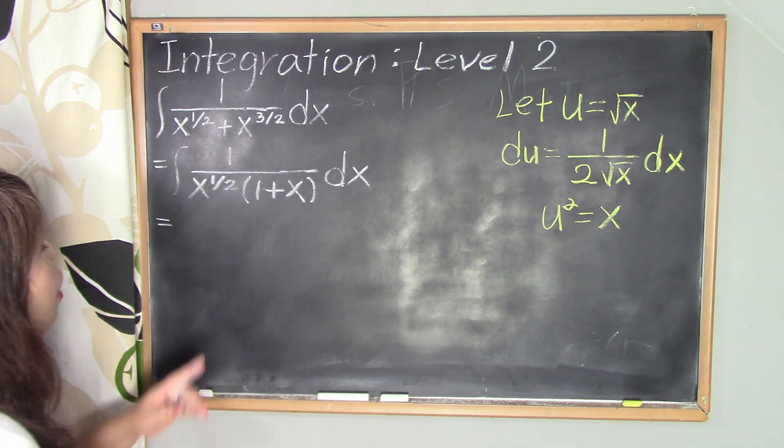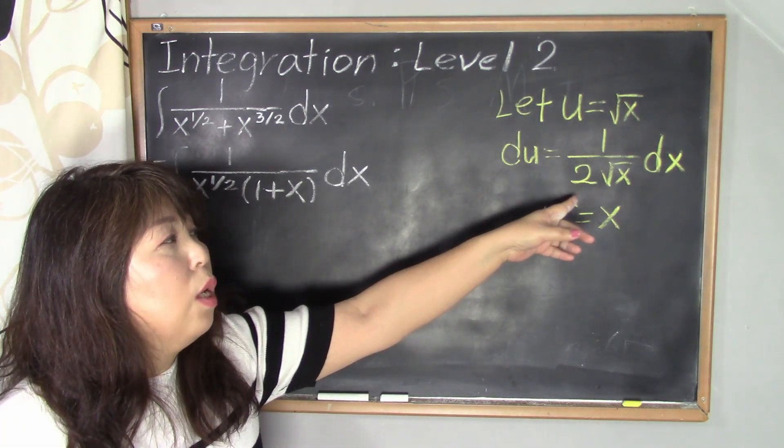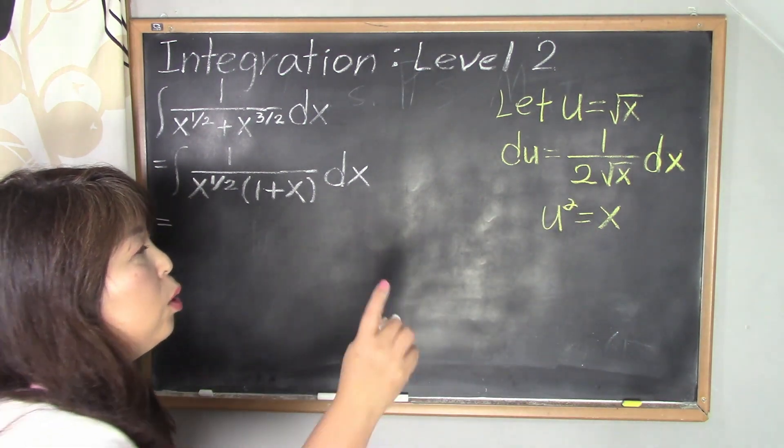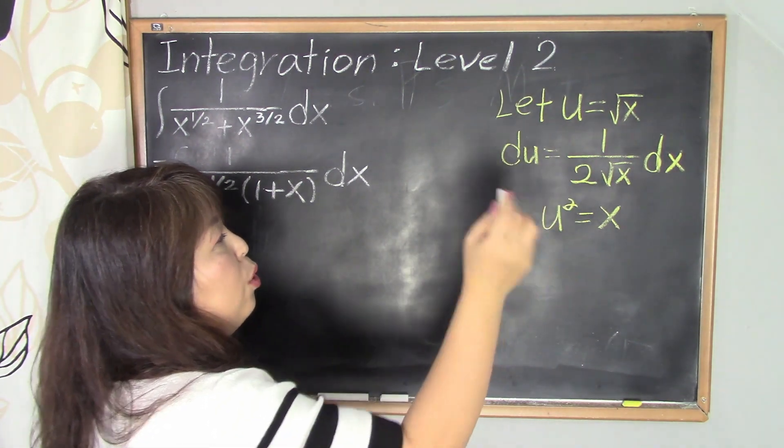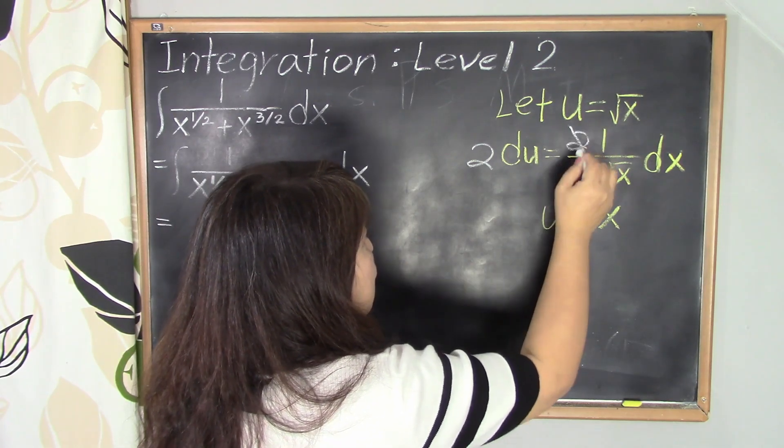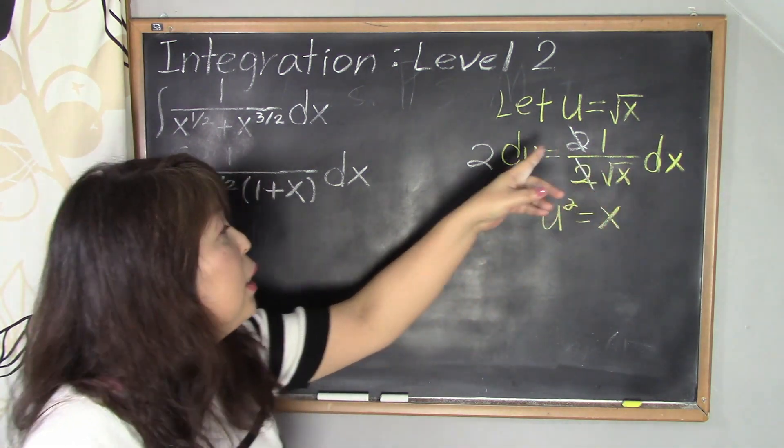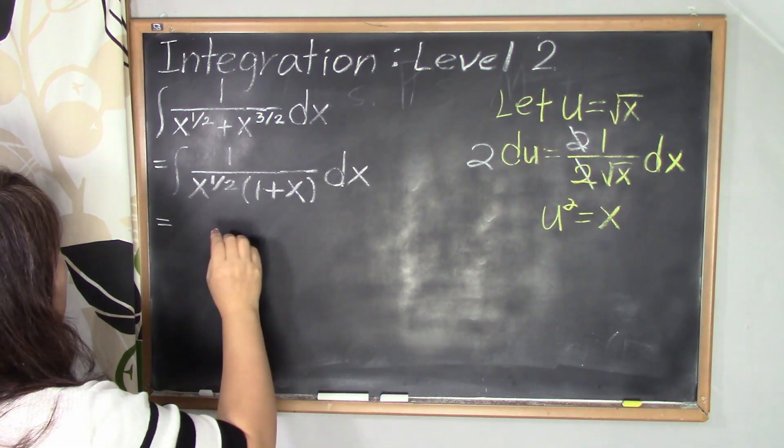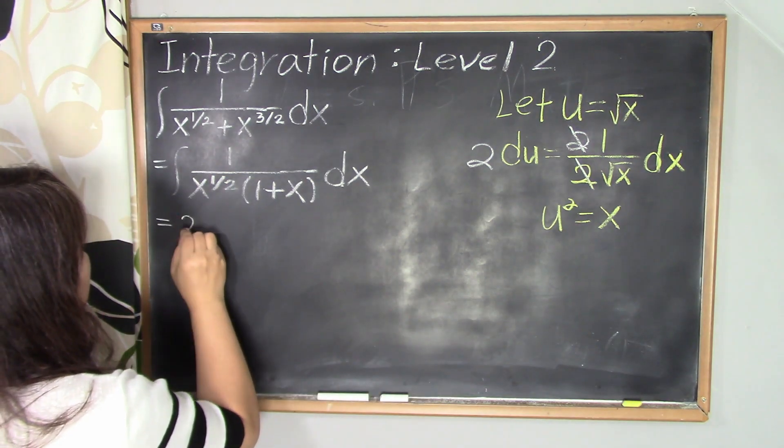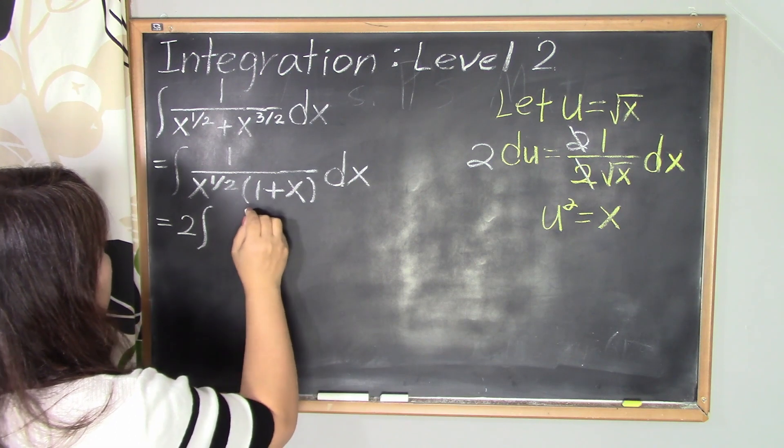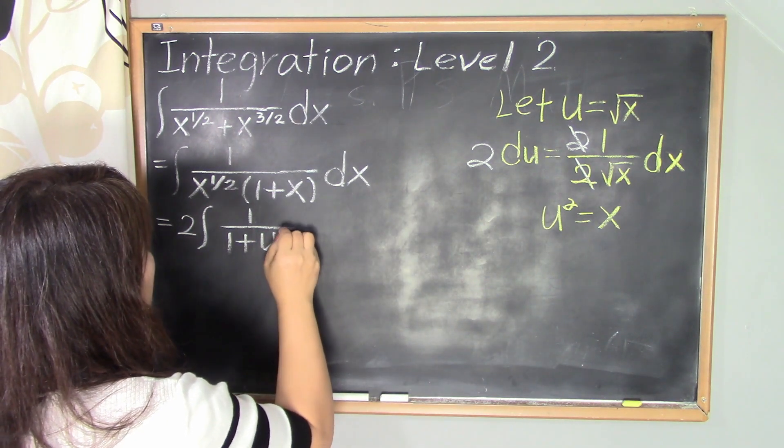So this is equal to, 1 over x to the 1/2 is 1 over square root of x. However, we have 2 here, so we can cancel 2 by multiplying both sides by 2. So 1 over square root of x dx equals 2 du. So this is going to be 2 du. However, I want to bring 2 in front of the integral because it's going to be easier to calculate. So 2 integral of 1 over 1 plus x, where x is u squared, and du.